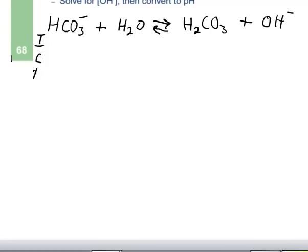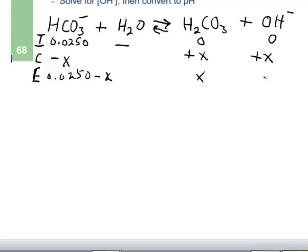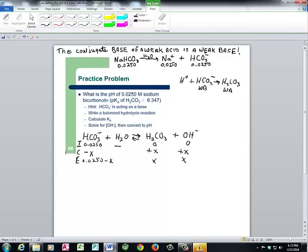Now we construct our ICE table: Initial, Change, and Equilibrium concentrations. The bicarbonate ion has a concentration of 0.0250 M. We don't care about water's concentration because it doesn't change. Initially, we have no hydroxide or carbonic acid. Since we have no products, the change is -X for our reactant and +X for both products. Adding initial to change gives us 0.0250 - X for reactant and X for both products.